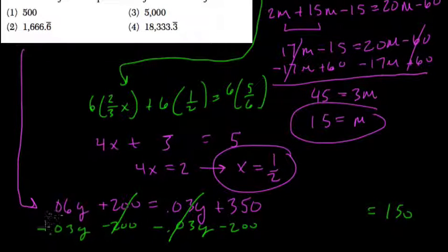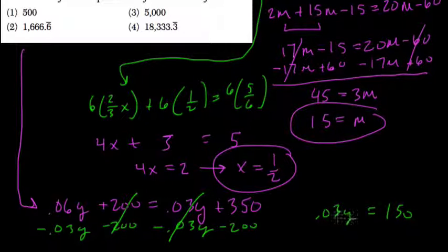Right, what's 0.06 minus 0.03y? Well, that's just 0.03y, right, taking half of this digit from 6.